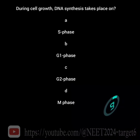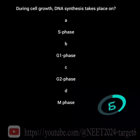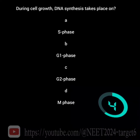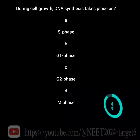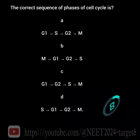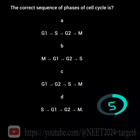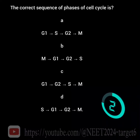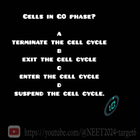During cell growth, DNA synthesis takes place on what? What is the correct sequence of phases of the cell cycle? Cells in G0 phase — what characterizes them?